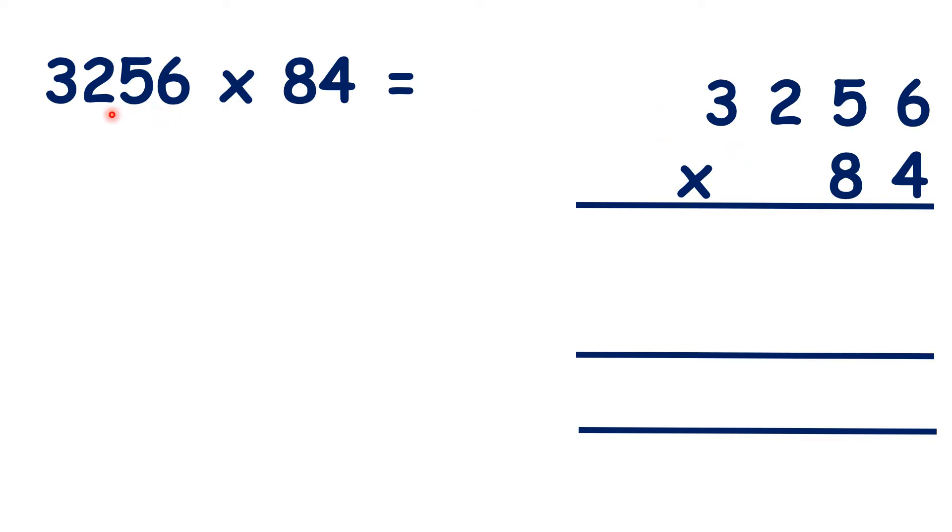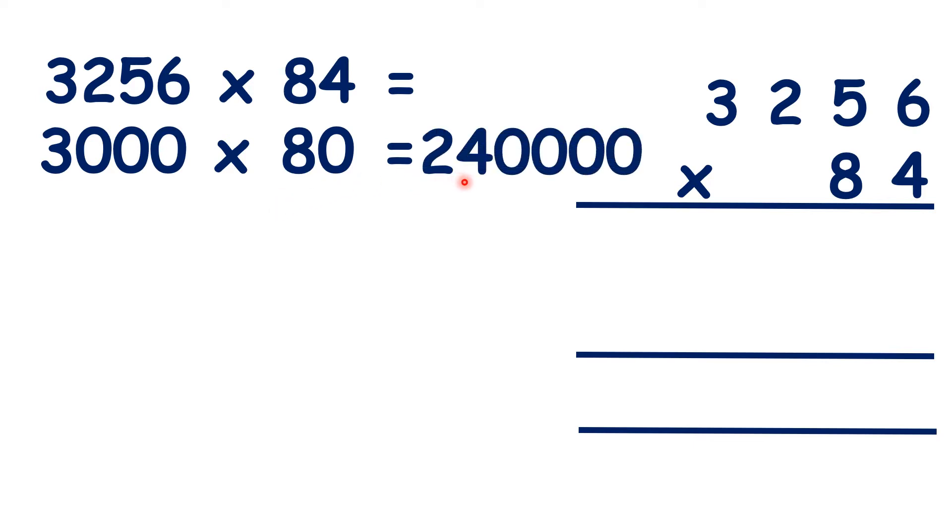So, if we round 3,256 to the nearest 1,000, we have 3,000, and 84 rounded to the nearest 10 is 80. So we can estimate that the answer will be close to 240,000, because 3 times 8 is 24, and if we have 4 end zeros in our question, we need 4 end zeros in our answer.